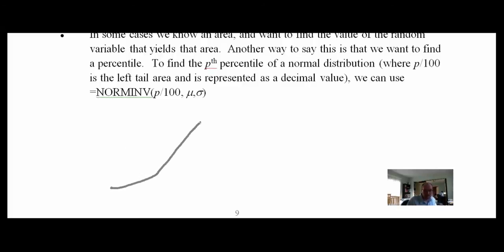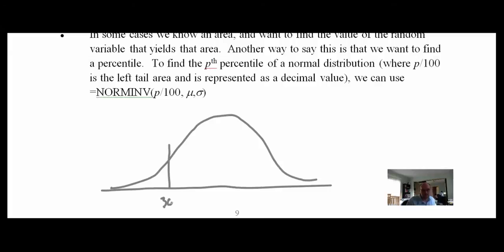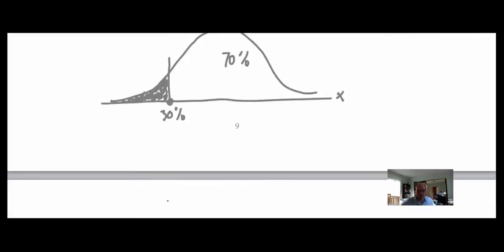Say we want the 30th percentile. We know 30% of the area is to the left of that point, and 70% is to the right. The NORMINV function takes the probability (0.30), the mean, and the standard deviation, and returns the x-value of that point on the distribution. This is very useful for supply-type problems.